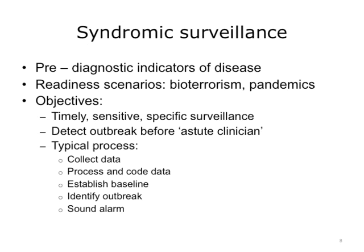We will now start discussing the difference between syndromic surveillance and traditional surveillance. Syndromic surveillance monitors pre-diagnostic indicators of disease. It grew in popularity in response to readiness for bioterrorism threats and pandemic outbreaks. Syndromic surveillance aims to perform timely, sensitive, and specific surveillance, and ideally will detect outbreaks before an astute clinician.